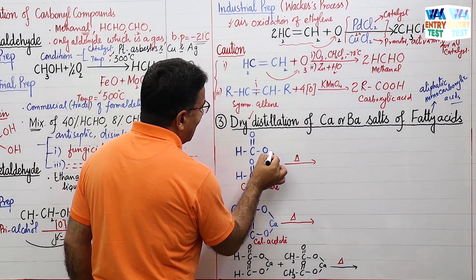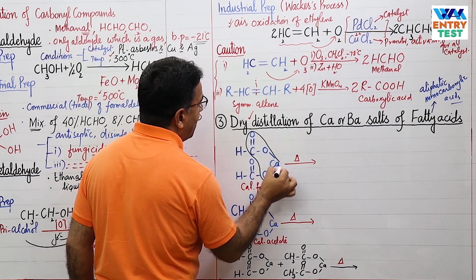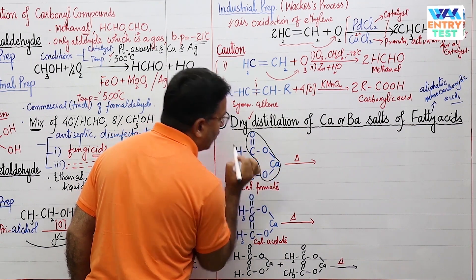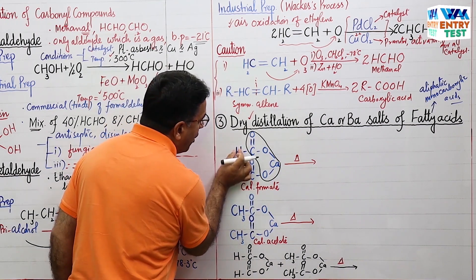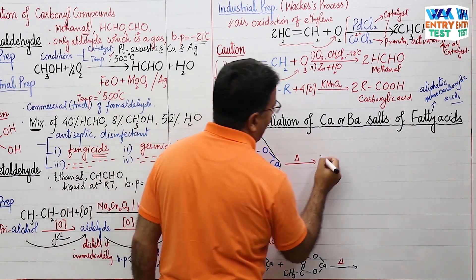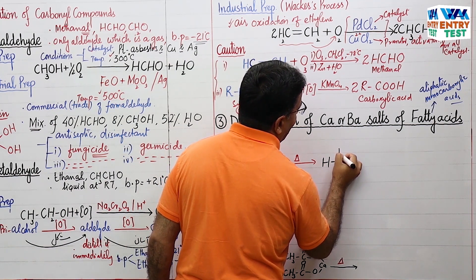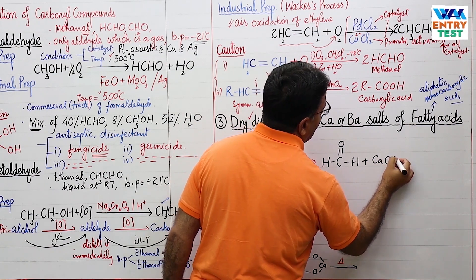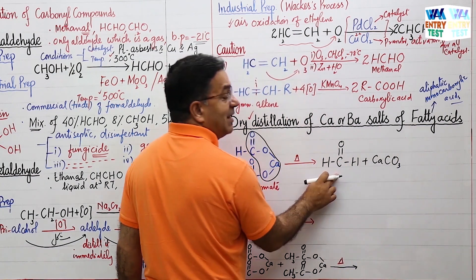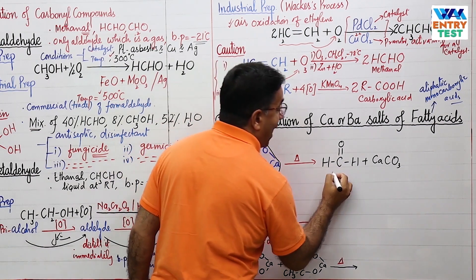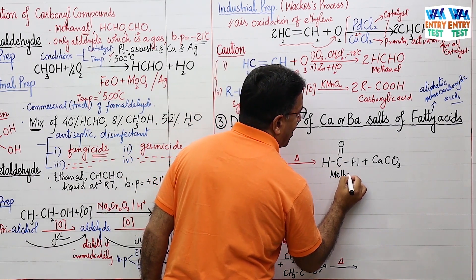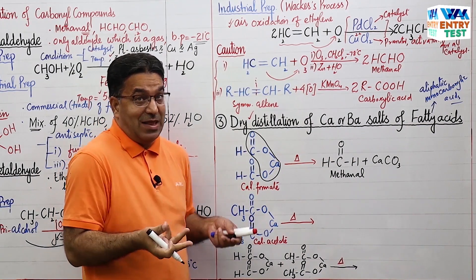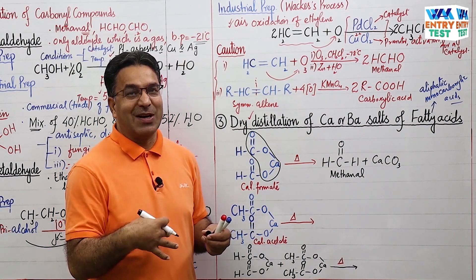On dry distillation of calcium formate with high temperature, you get formaldehyde — also called methanal — and calcium carbonate (CaCO3). So the product here is methanal, which is formaldehyde.